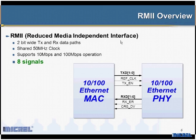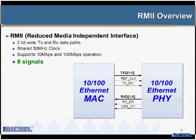All in all it takes up 16 signal lines to interface anybody's PHY to anybody's MAC. The other interface is RMII — reduced media independent interface. This one is 2 bits wide with a single 50 megahertz clock, and this path ends up being an 8-bit wide interface.